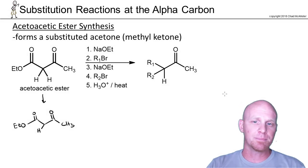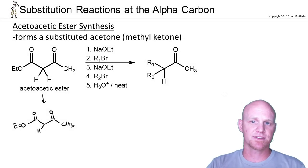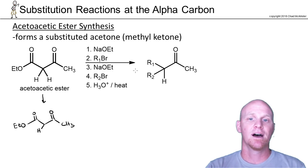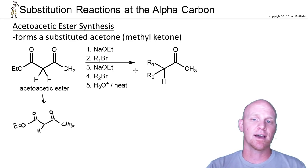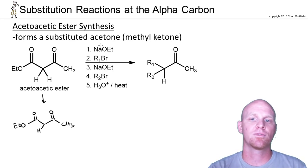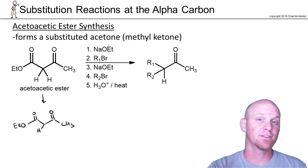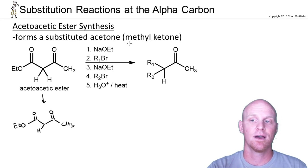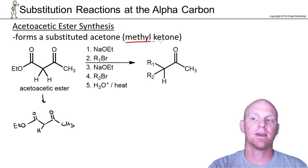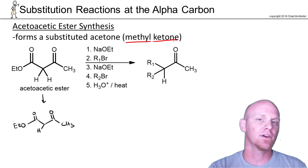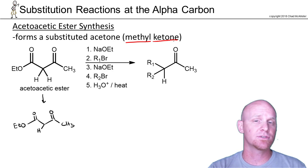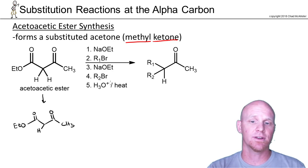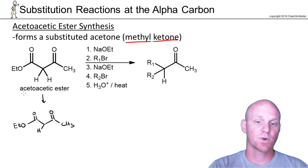Our next reaction is another template synthesis, just like the malonic ester synthesis, and this is the acetoacetic ester synthesis. In this case we're going to form a substituted acetone instead of acetic acid, which means it's always going to be a methyl ketone. This synthesis is always used to form a methyl ketone.